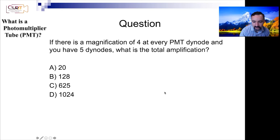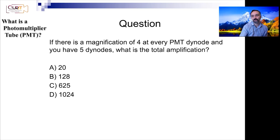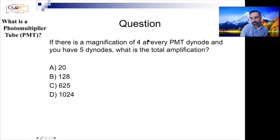Most people got the correct answer: D — 1024. It's four to the power of five, not five to the power of four. So it's four times four times four times four times four. Again, this is an under-representation. If you have ten dynodes with a magnification of seven, you're looking at an amplification of around ten million. PMTs amplify the input signal on the order of millions.